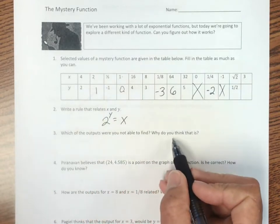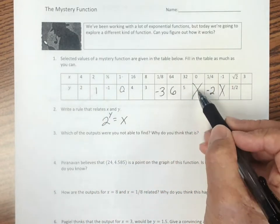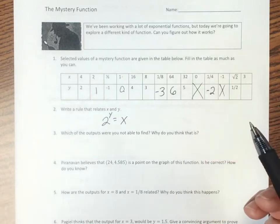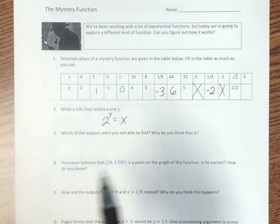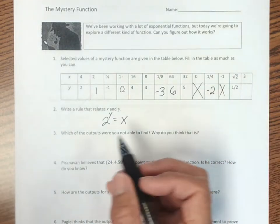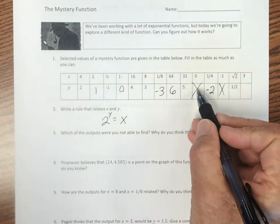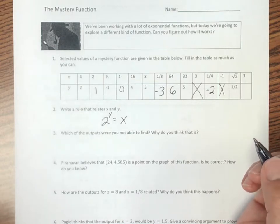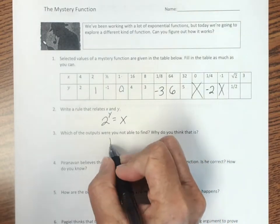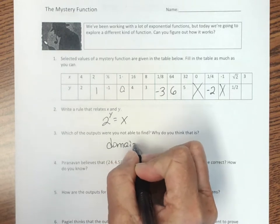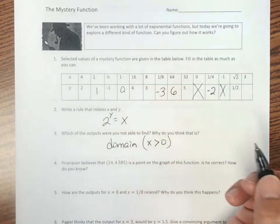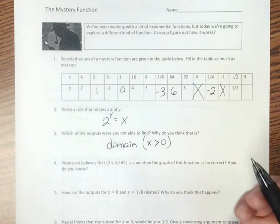And the outputs which we weren't able to find, well, we can't do this one. And this one we weren't sure of because it just doesn't know how that fits in there. And part of the reason we could not find this one has to do with the domain. And our domain of this mystery function is that x must be greater than 0. So for 0, we could not find a value.